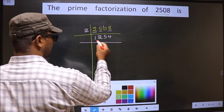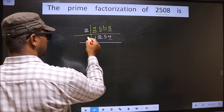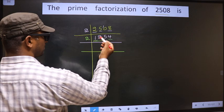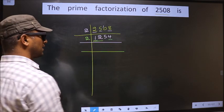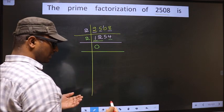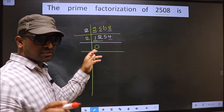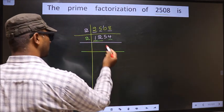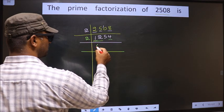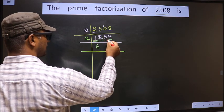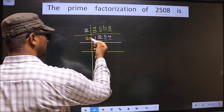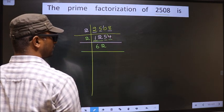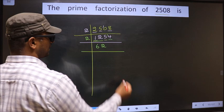Now for this number the last digit is 4, which is even, so we take 2 here. The first number is 1; 1 is smaller than 2, so we should take 2 numbers, that is 12. Whenever we take 2 numbers, we must compulsory put 0 — but 0 at the starting does not count, so no need to write 0 at the starting. So here we have 12; when do we get 12 in the 2 table? 2 times 6 is 12. The other number is 5; a number close to 5 in the 2 table is 2 times 2 is 4. 5 minus 4 is 1; carry it forward making it 14. When do we get 14 in the 2 table? 2 times 7 is 14.